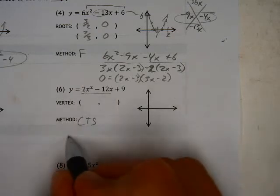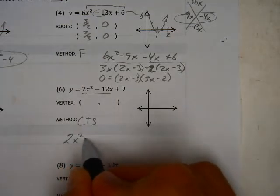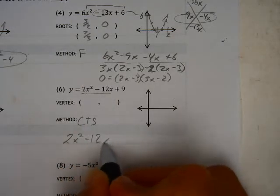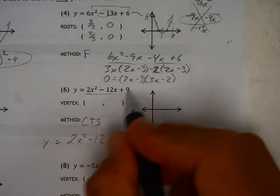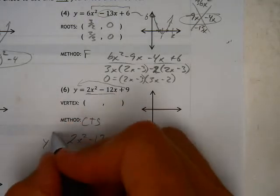But we're going to sequester the 9. We've got 2x squared minus 12x, and I'm going to move that 9 over to the other side. So y equals - so if I move it over there, it becomes a minus 9.